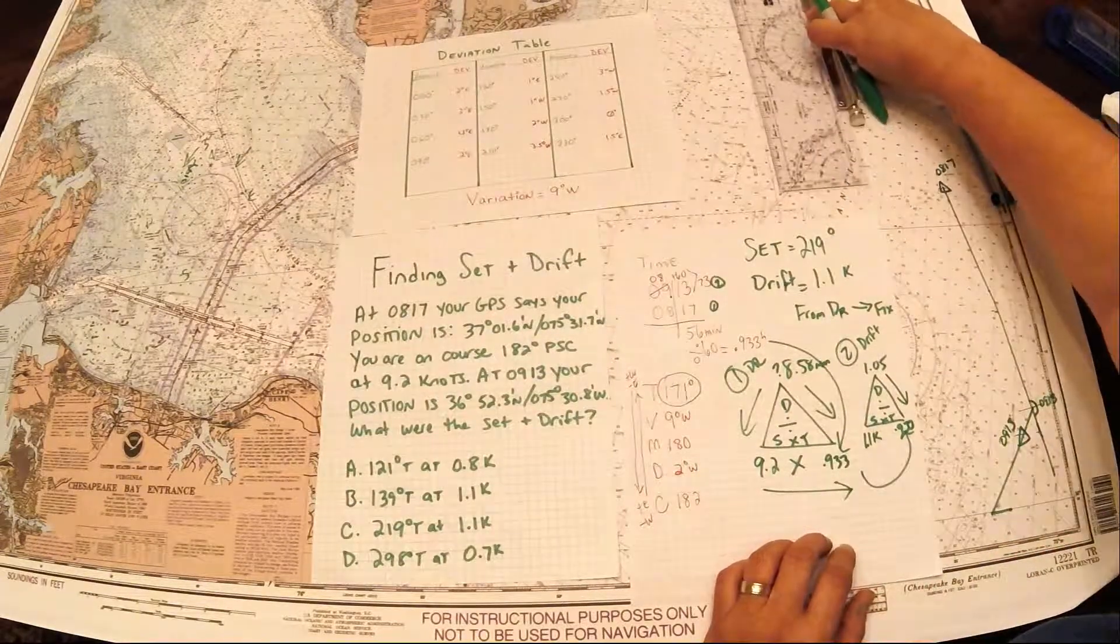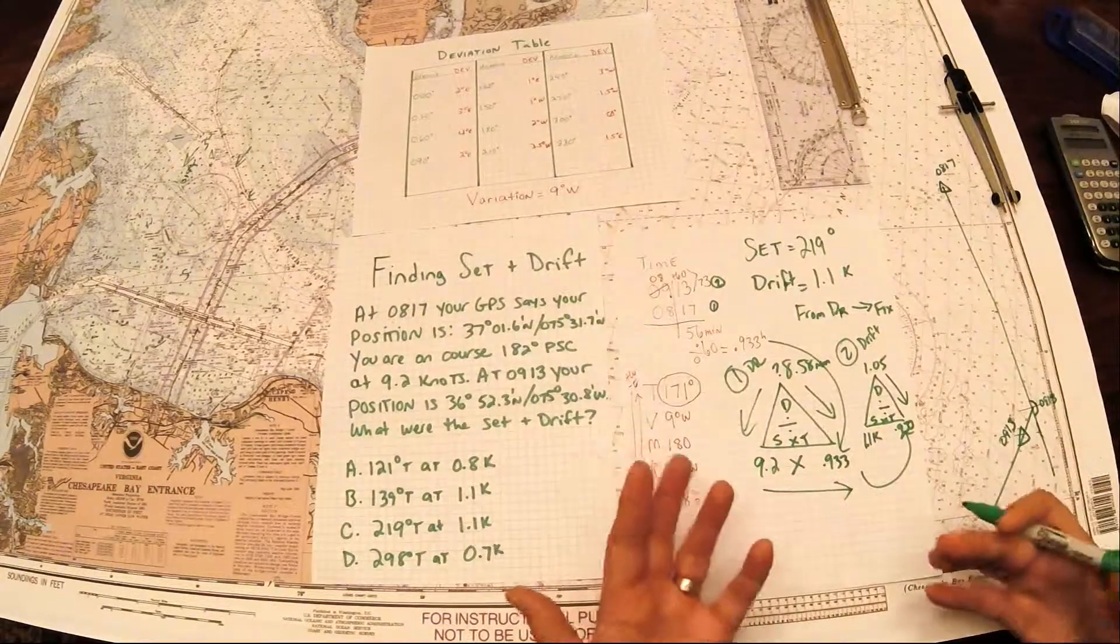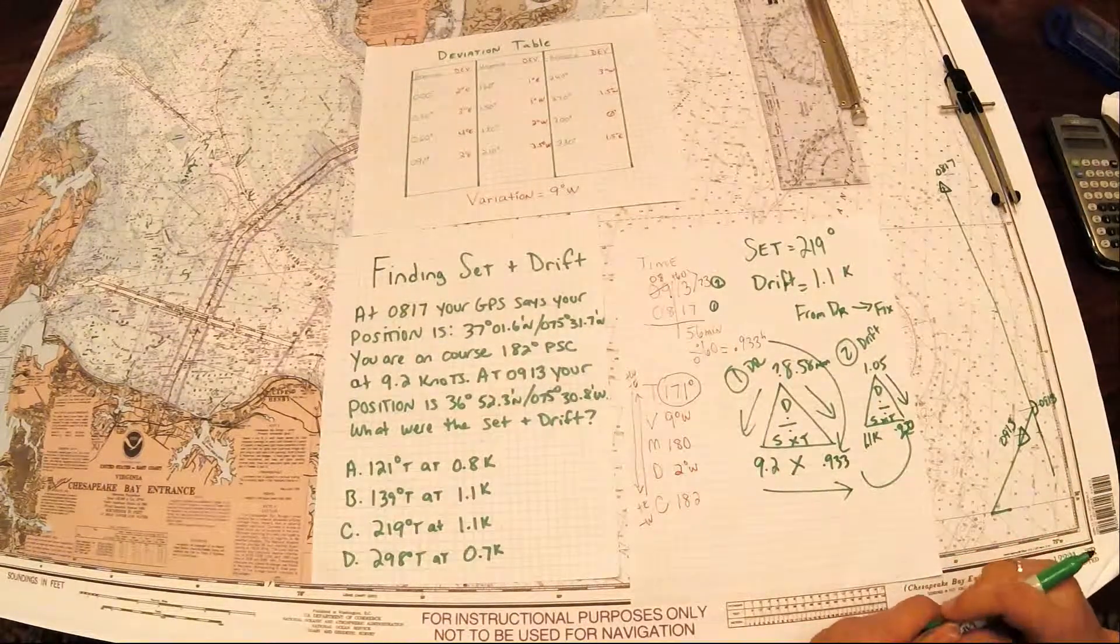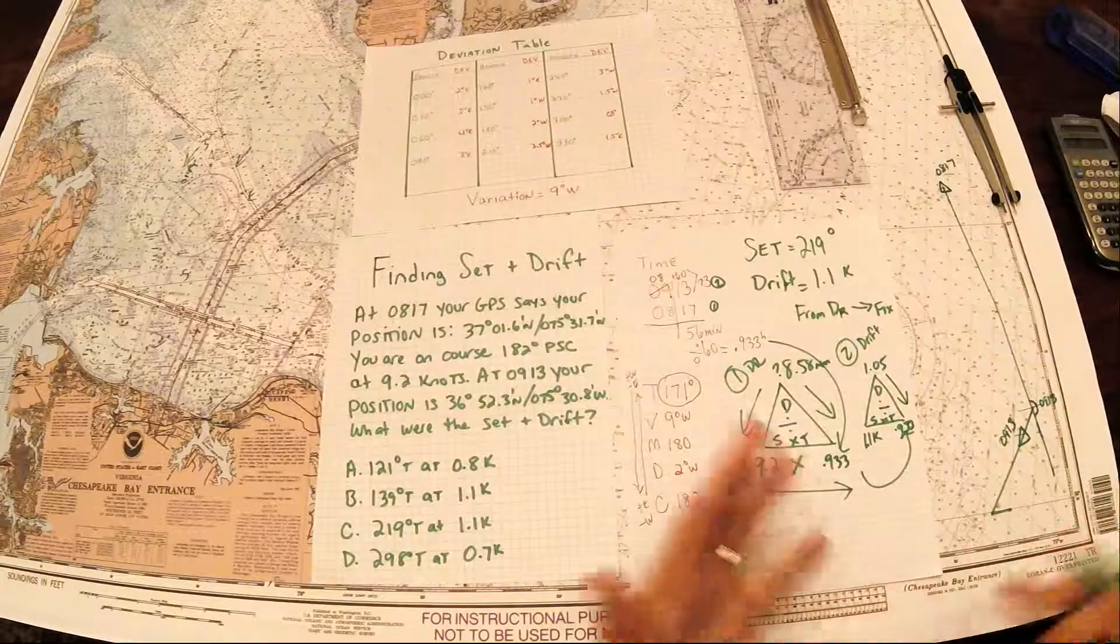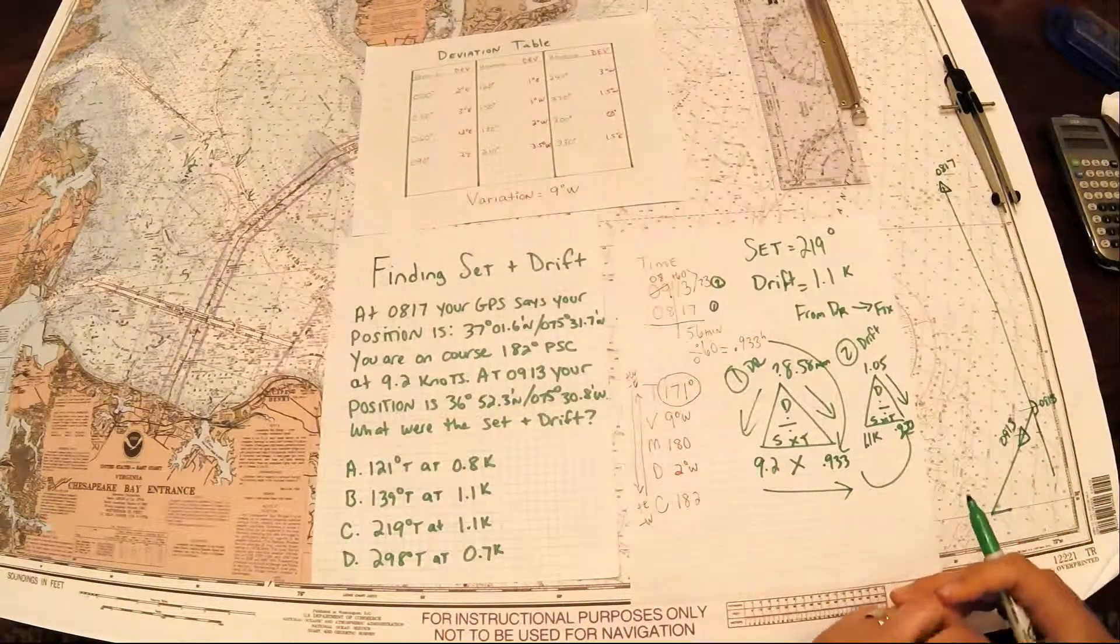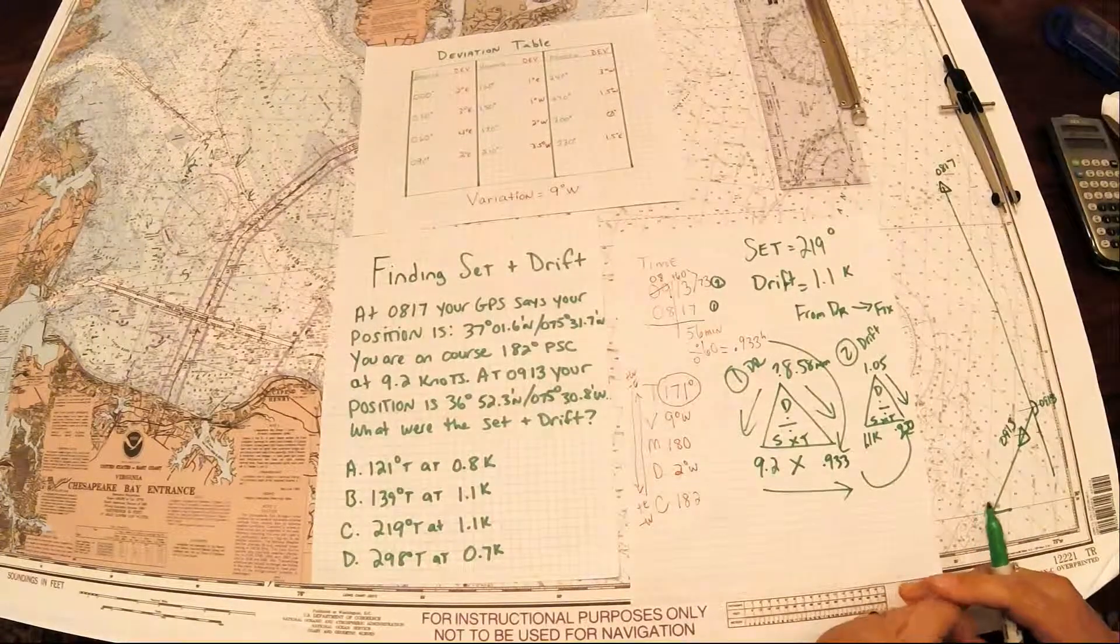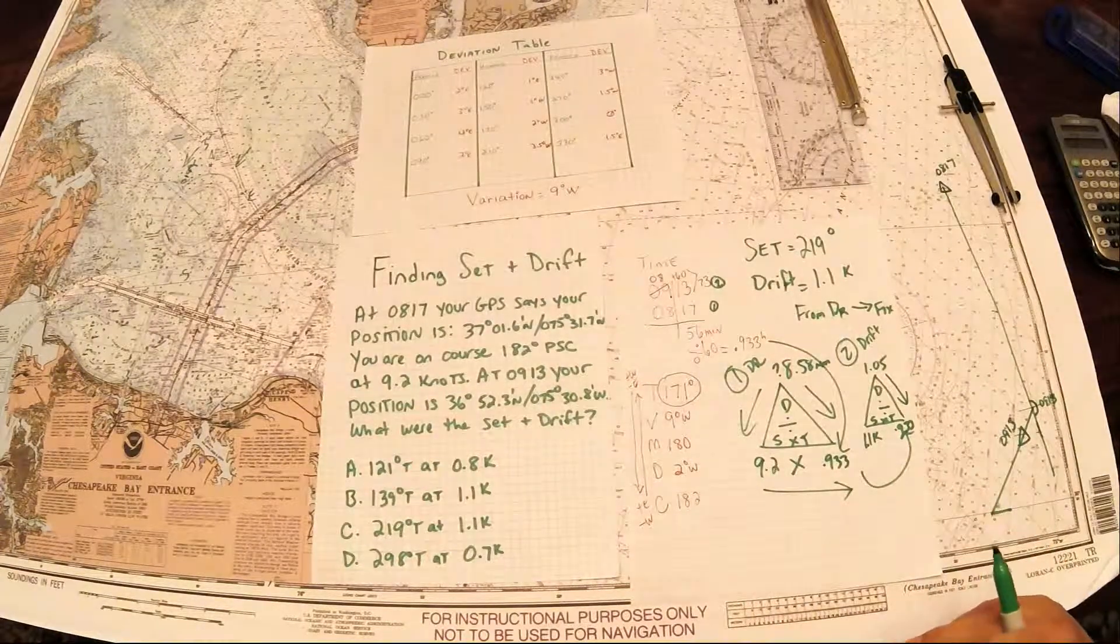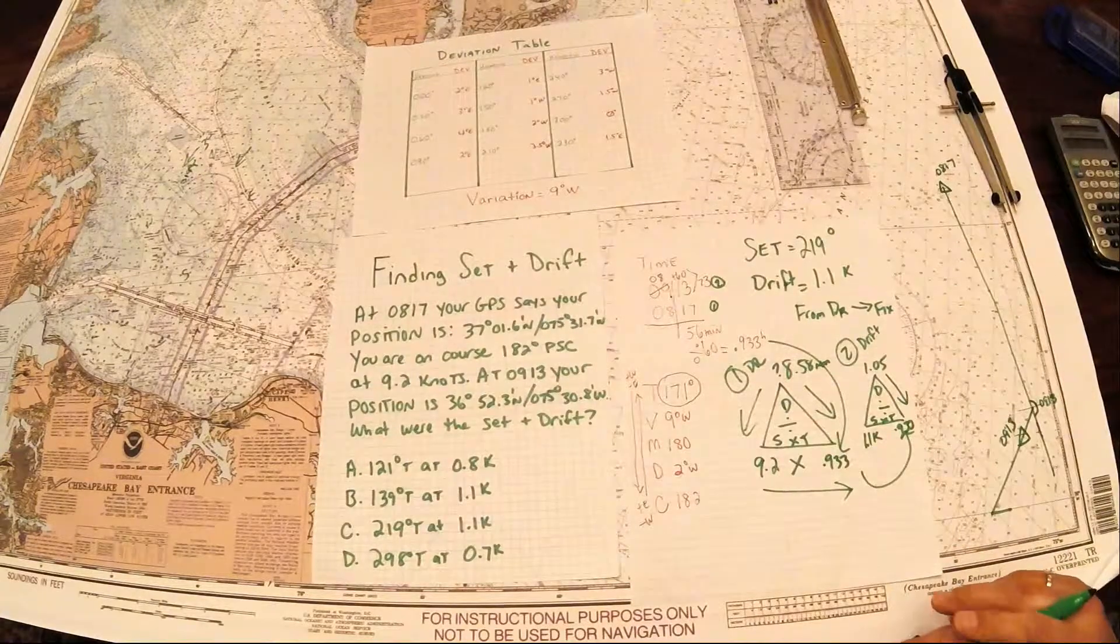Now if any of this was too fast, you can always rewind or pause and make sure that you're up to where I'm at in the problem. But practice these because there's a lot of steps involved in it, but it's pretty doable once you've practiced it a little bit and gotten used to it. So that's how you do set and drift. Go practice some in your student workbook.